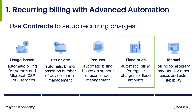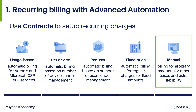Fixed Price Billing allows you to automatically charge your clients for fixed amounts and quantities. In Advanced Automation you can set up such contracts and charge your clients on a monthly, quarterly, semi-annual, or annual basis. Finally, Manual billing allows you to submit arbitrary amounts to your contract part quantities for extra flexibility. Now let's see how you can set up those billing models with Advanced Automation.